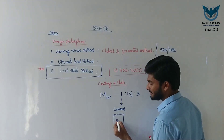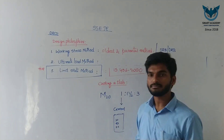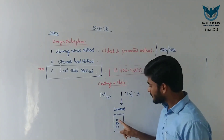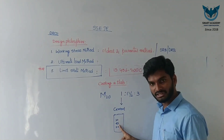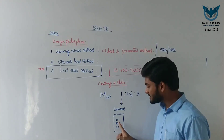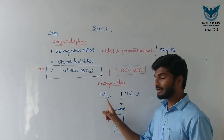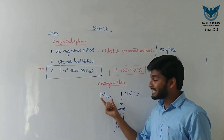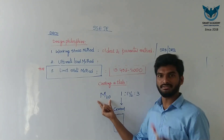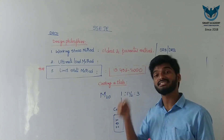Cement is available in grades: 33 grade, 43 grade, and 53 grade. These are the grades of cement. So we have different grades of concrete and also different grades of cement, and choosing the right one is an important task for a civil engineer.